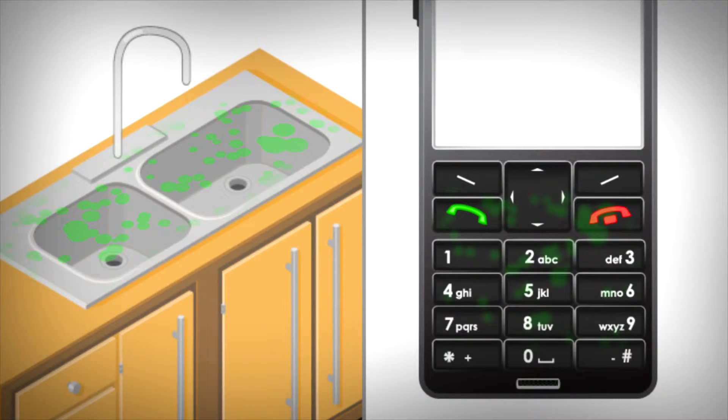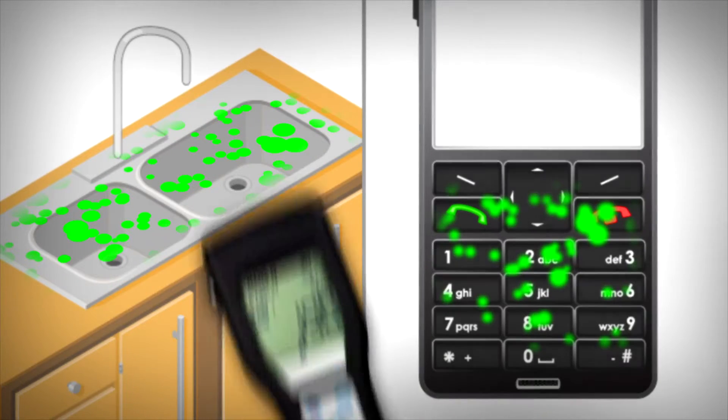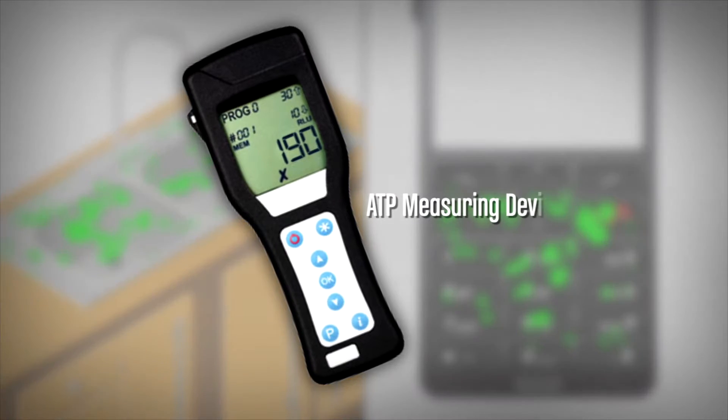Any microbes picked up by the swab will provide the missing ATP, producing light. The light can even be measured on a simple handheld device.